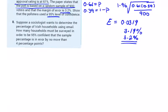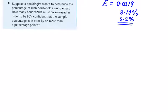And then in question 8, suppose a sociologist wants to determine the percentage of Irish households using email. Well, this is a bit outdated, it's pretty much in the 99s I'd imagine at this point. How many households must be surveyed in order to be 95% confident that the sample percentage is in error by no more than four percentage points? So in this case, you can see here we're looking for n and it doesn't give us anything about p.